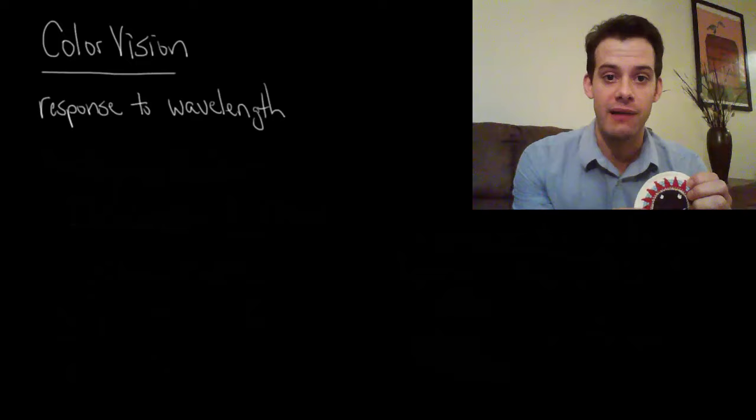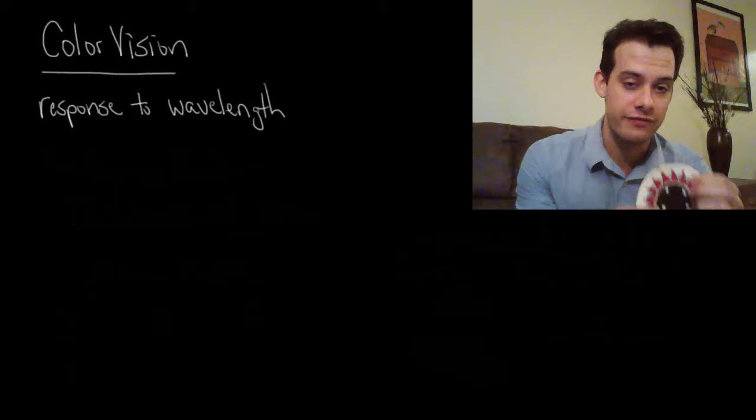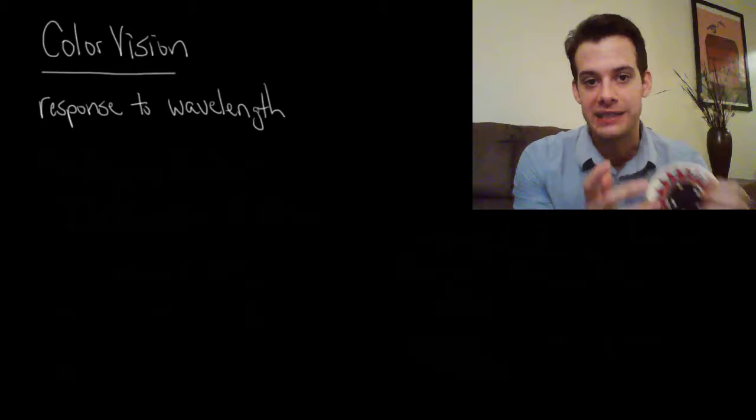All that we're really saying is that the cloth reflects wavelengths of light that we perceive as being red. So it's not really the case that the cloth is red and it's not even really the case that the light that's reflected is red. It's just that the light that's reflected is a particular wavelength that we perceive as being red.